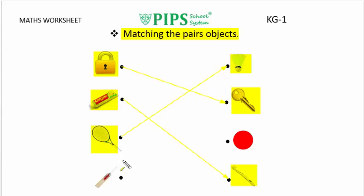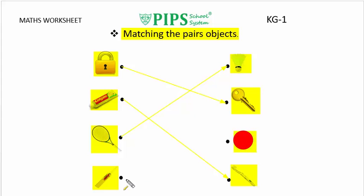The last object is bat. Its pair is ball. Let us match the bat with its pair like this.